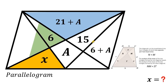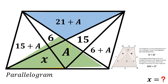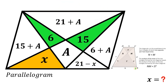This triangle also measures 21 plus a. Since we have 6 here, this region has area 15 plus a. The two large triangles both equal 21 plus a. With a and x present, the small triangle has area 21 minus x. Adding the three sub-regions together gives 21 plus a.